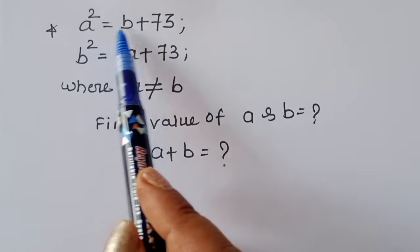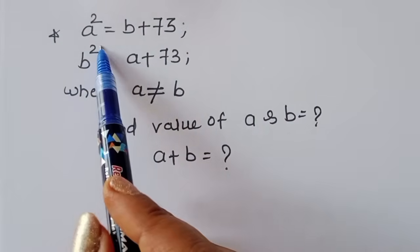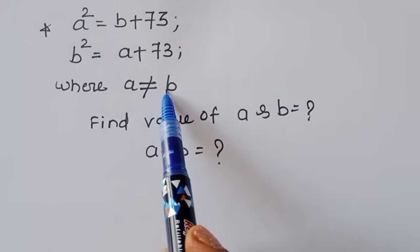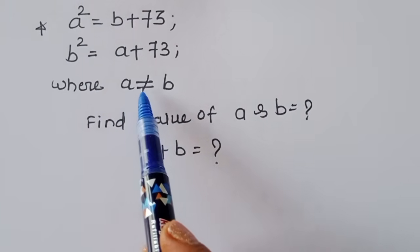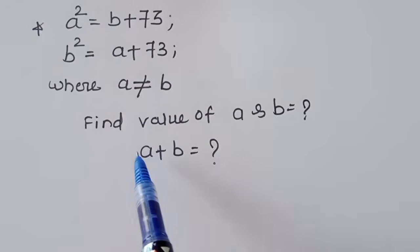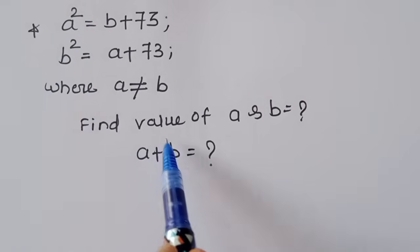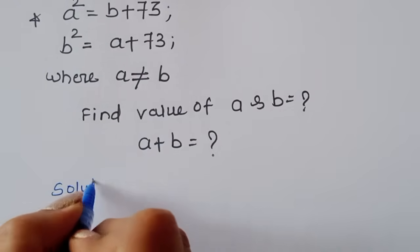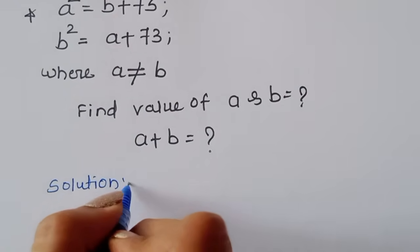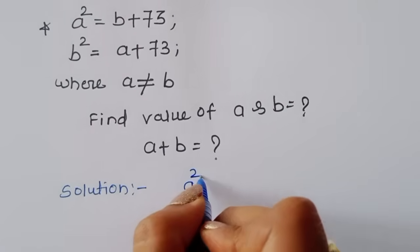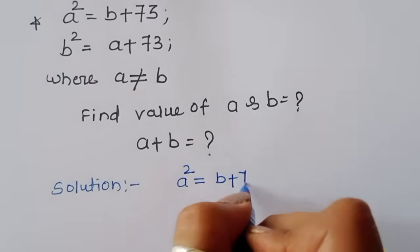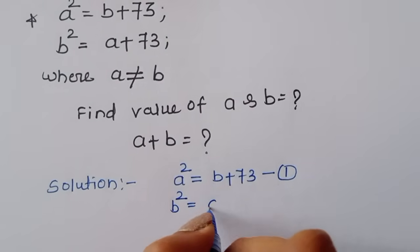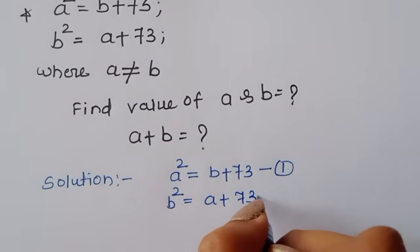The question is: given a² = b + 73 and b² = a + 73, where the condition is a is not equal to b, we have to find the value of ab and the value of a + b. Let's see the solution. Equation one: a² = b + 73. Equation two: b² = a + 73.